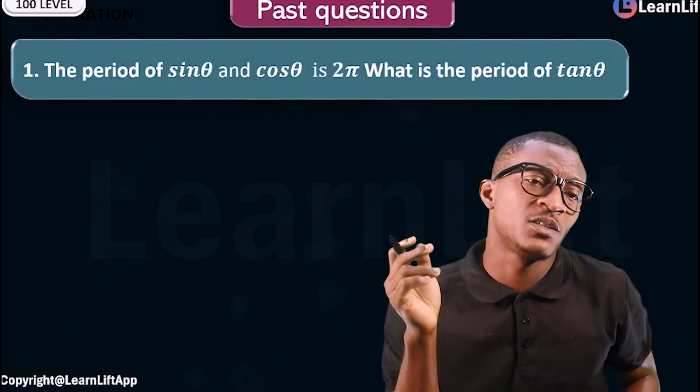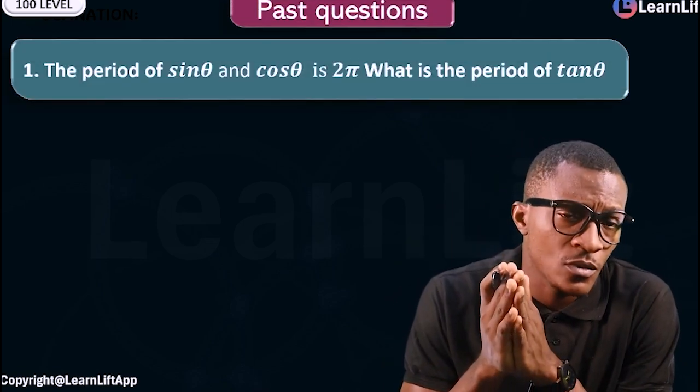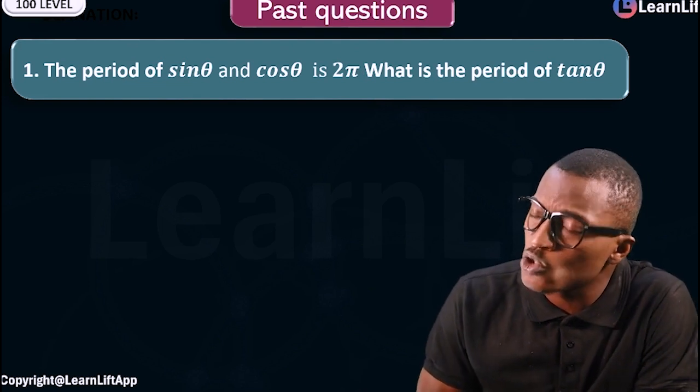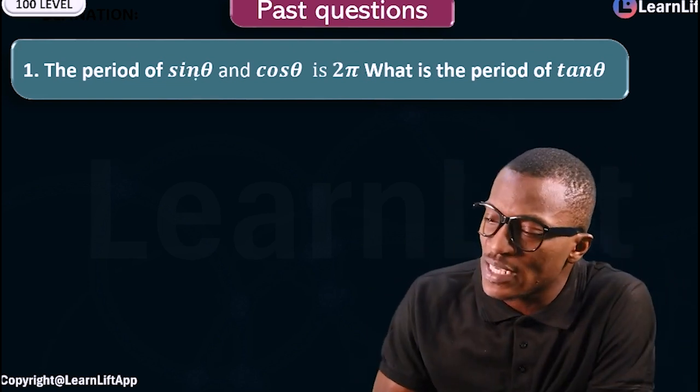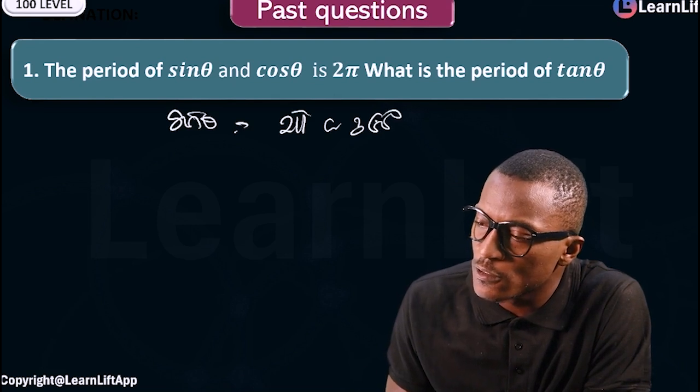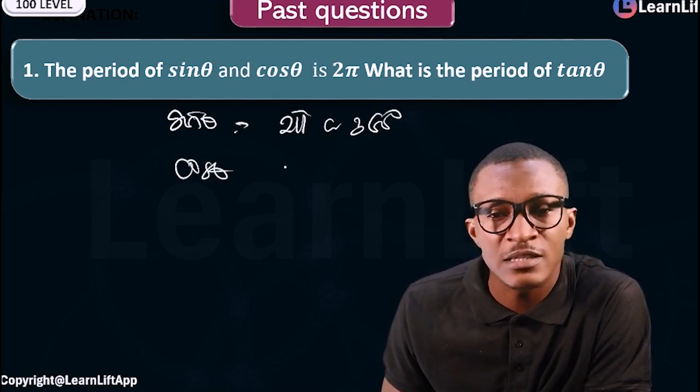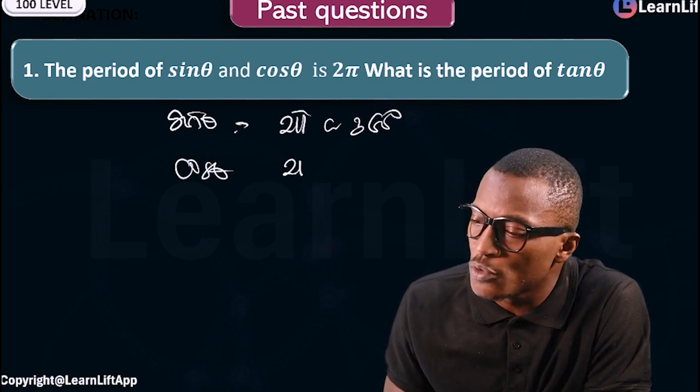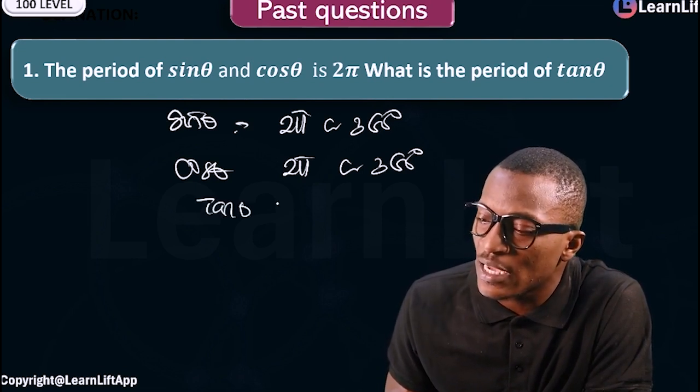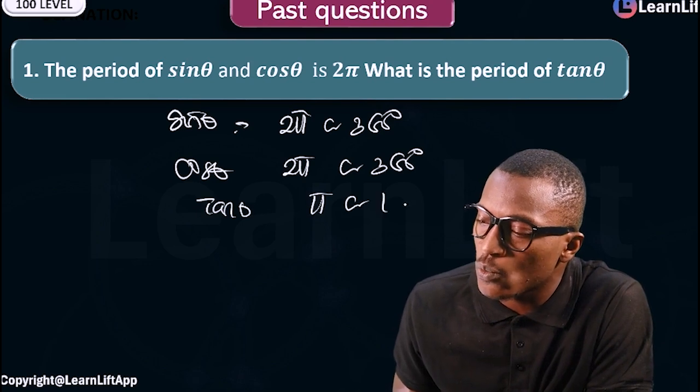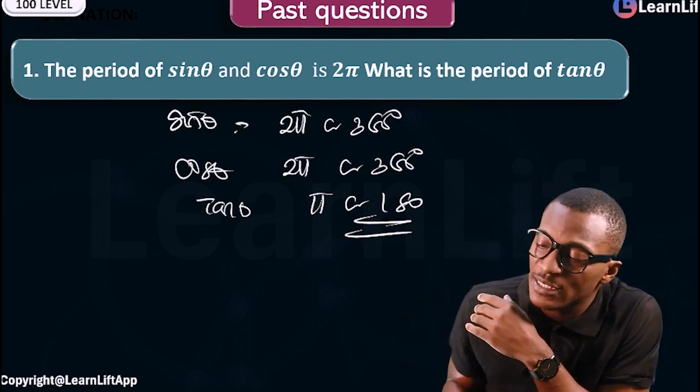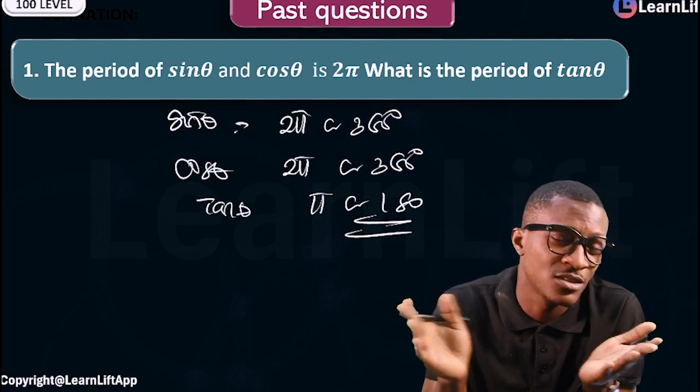The past question says that the periodic function of sine and cosine is 2π radians. The question now is: what is now the periodic function for tan? We know that sine theta has a periodic function of 2π radians or 360 degrees. Cosine theta has a periodic function of 2π radians or 360 degrees. What would be tan theta? Tan theta will be π radians or 180 degrees. The answer to this question is: tan theta is equal to π radians or 180 degrees.